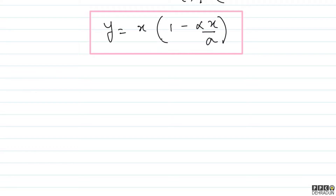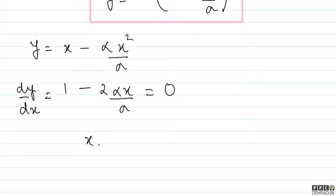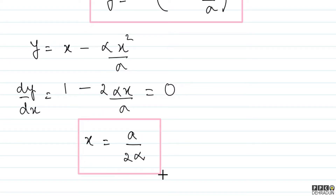We can write y = x − αx²/a. Whenever we need to plot a graph, we first check where the slope is zero. So we look at dy/dx = 1 − 2αx/a. Setting this equal to zero, we get x = a/(2α), where the slope is zero.